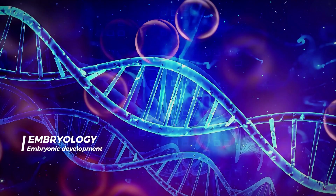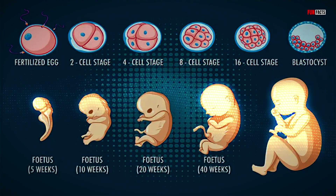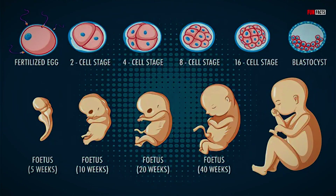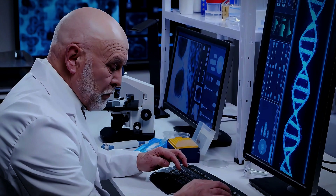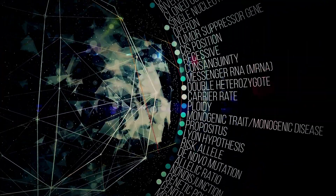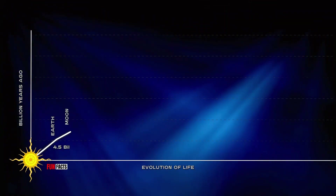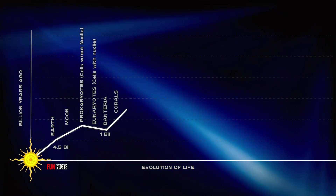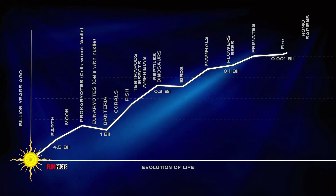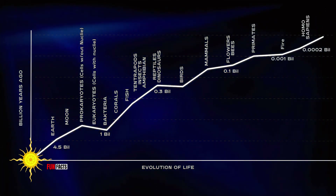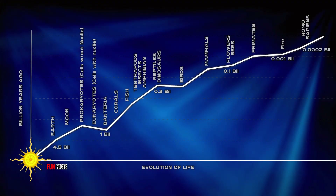Embryonic development across species further illustrates our shared evolutionary heritage. During the early stages of development, many animals exhibit common patterns that point to a universal ancestry. These similarities in embryonic development reinforce Darwin's idea of a universal tree of life, where all species are interconnected through a shared evolutionary past. Each new discovery in genetics and embryology deepens our understanding of evolution, continually reinforcing the foundational principles laid out by Darwin, from genetic sequences that link us to our primate relatives to the embryonic stages that echo our common origins.